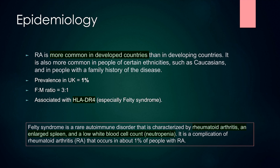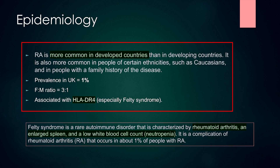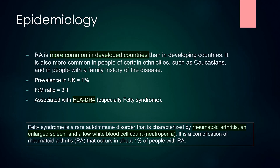Now a little about the epidemiology of rheumatoid arthritis. RA is more common in developed countries than in developing countries. It is also more common in people of certain ethnicities such as Caucasians and in people with a family history of the disease, which means it has a genetic component. Prevalence rate in the UK is 1% but worldwide it is around 0.5 to 1%. Female to male ratio is 3 to 1, and it is associated with HLA-DR4, especially for Felty syndrome.